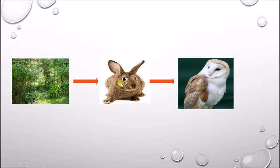Same here. The rabbit has energy. It doesn't make its own energy, but it does have energy in it. And that energy is passed on to the owl when the owl eats the rabbit. So here again, the arrow is showing that the rabbit is eaten by the owl. This is the flow of energy in this ecosystem from one feeding relationship to the next.